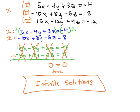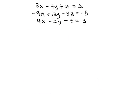Let's take a look at another problem where something funny might happen as well. In this problem, if we label equation 1, 3x minus 4y plus z equals 2, equation 2 is the negative 9x plus 12y minus 3z equals negative 5, and equation 3 is 4x minus 2y minus z equals 3.